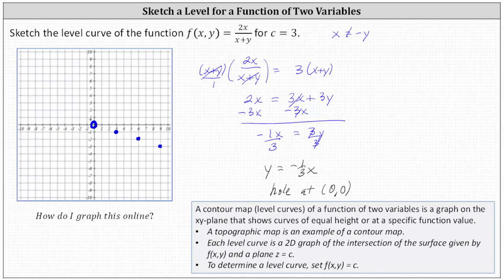We can also go back to the origin and go up one and left three units to find additional points. And now we'll graph the level curve passing through the points, but of course not passing through the origin because there's a hole at the origin.